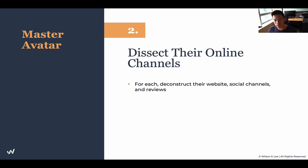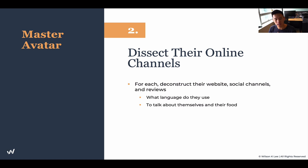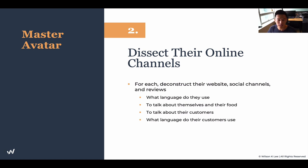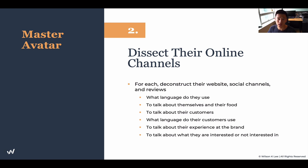Step two is to dissect their online channels. For each of these restaurants, deconstruct their whole website, social media channels, and all the reviews. What language do they use? Do they use health-conscious language, or are they really casual? Are they fine dining and proper? Whatever language they use is a direct relation to the customer they are serving — how they talk about themselves, their food, and their customers. What language do their customers use? Are they very sophisticated or very casual? By studying them, we understand their experience of the brand, what they're interested in and not interested in.